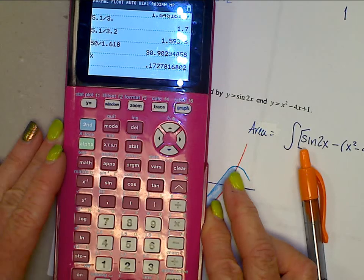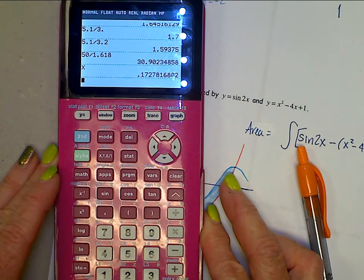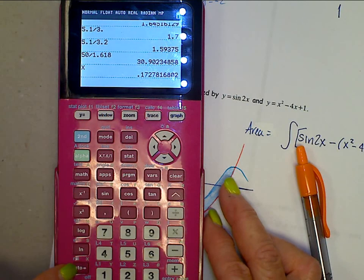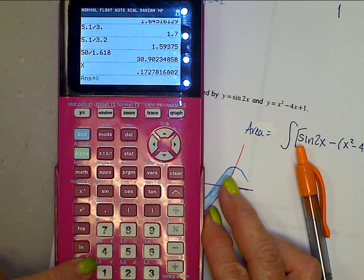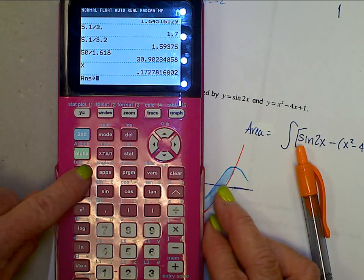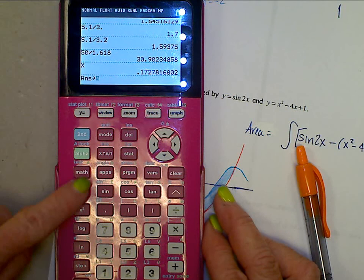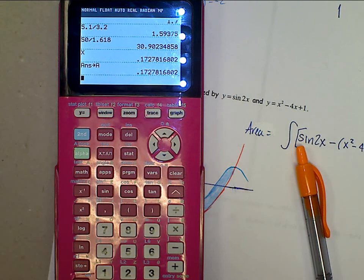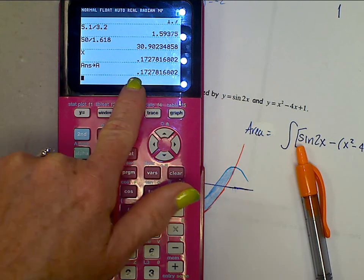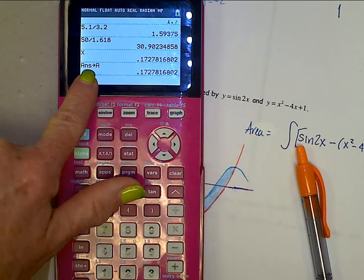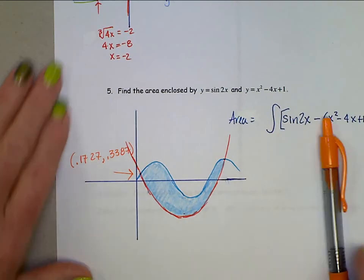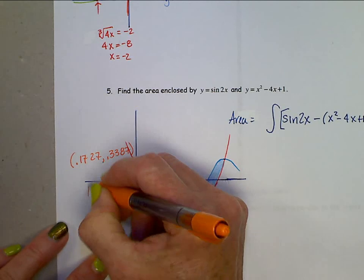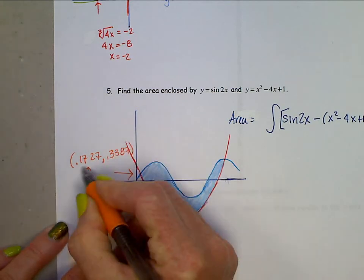So to do that, you're going to take this value and just go to store, which is S T O, right down here, right by the 1. Store. You're going to store that as memory bank A. So go alpha A, enter. That number now is stored in A. So go back to your paper and just identify that this X coordinate right here is A.